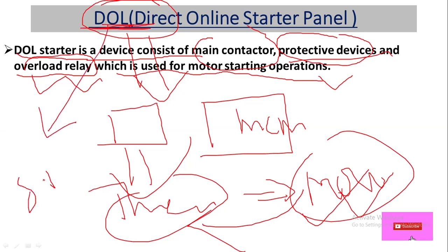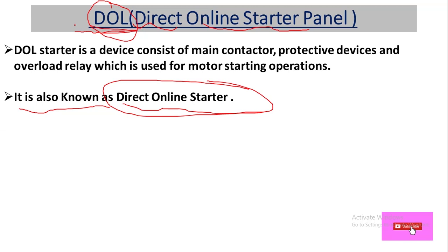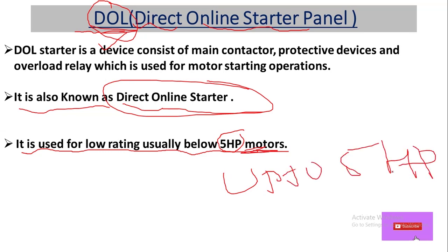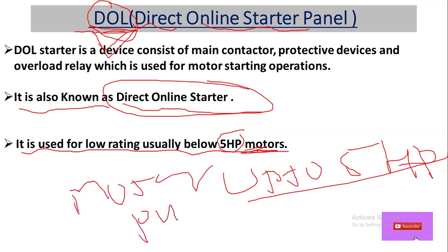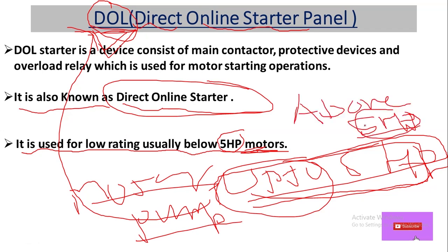DOL stands for Direct Online Starter. It is used for low-rating motors, generally below 5 HP. We use DOL starter up to 5 HP — that is acceptable. So for motors or pumps below or up to 5 HP we go for DOL starter.